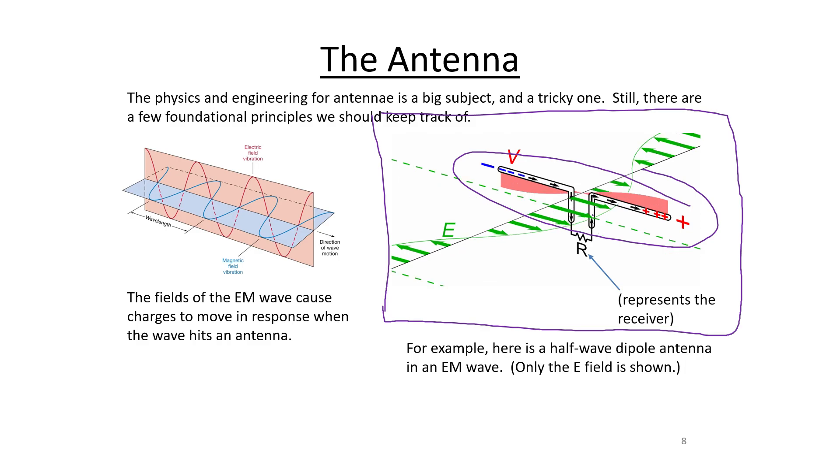And the animation runs a little bit quickly but what you should be able to see is that as the electric field is at a peak and then a zero and then a trough and then a peak and then a zero and then a trough, the charges, remember that charges in a conductor are relatively free to move when they feel an electric force. Well an electric field causes an electric force and it causes electrons to move back and forth within the conductor of the antenna here.